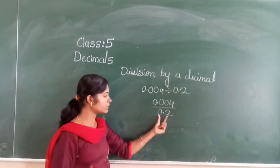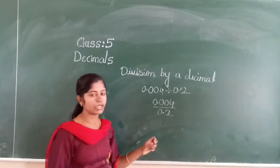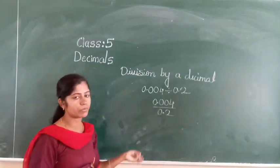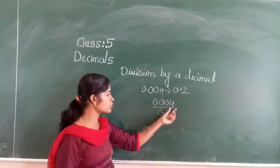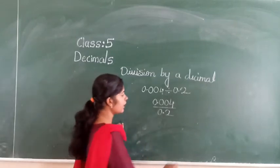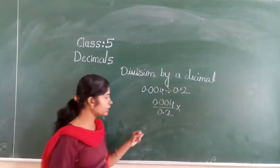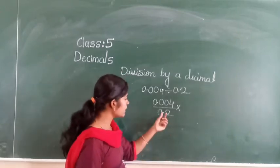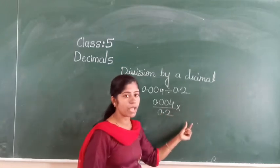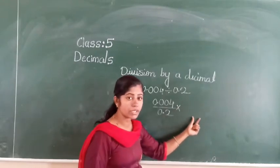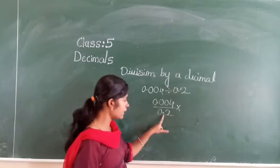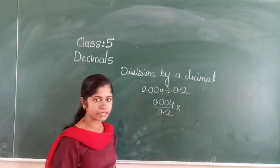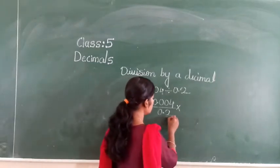I need to convert 0.2 into a whole number. Whole numbers are 0, 1, 2, 3, 4, 5, 6... Now 0.004 and 0.2 are decimal numbers, so how do we convert this to a whole number? When converting a decimal to a whole number, you need to do one small simplification. In the denominator, 0.2 is there. After the decimal point, 1 digit is there, so you multiply with 10. If 2 digits are there, you multiply with 100. If 3 digits are there, you multiply with 1000.